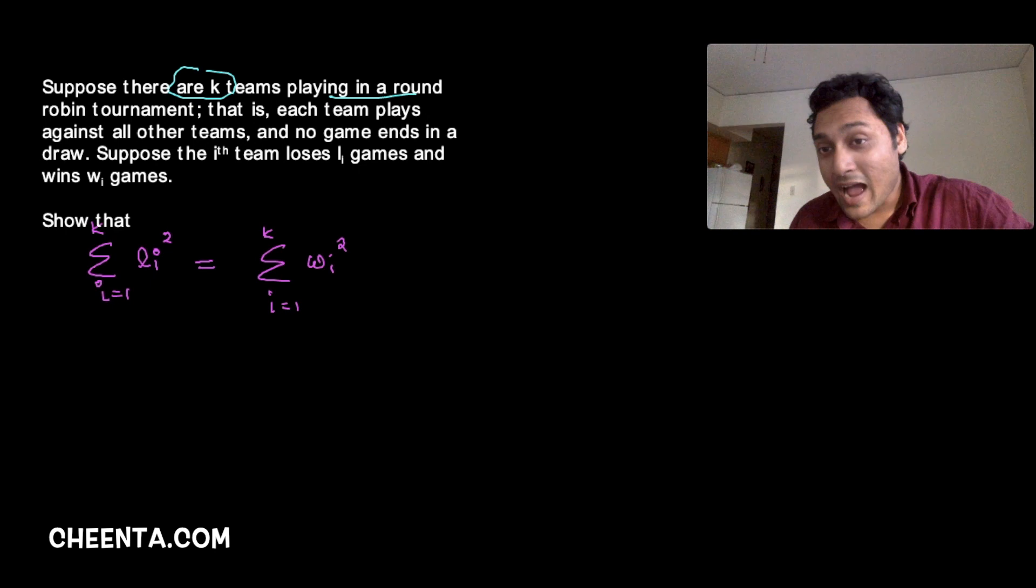And it also says suppose the ith team loses Li games. So team, let's say team 5 loses L5 games and wins W5 games. So I am just denoting the number of games lost and won by the ith team by certain letters. What I want to show is that the summation of all these Li squares, so L1 square plus L2 square plus Lk square, that is equal to W1 square plus W2 square up to Wk square. So this is the problem that we are interested to solve.